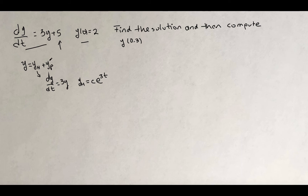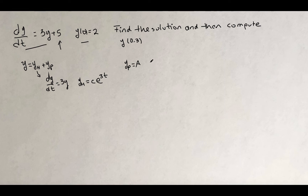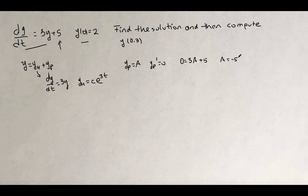To find the particular solution, we look at the non-homogeneous part. Since it is a constant, we look for a particular solution of the form y equals a. The derivative would be 0, and replacing into the original equation we get that 0 must equal 3 times a plus 5, which means a should be negative 5 thirds.